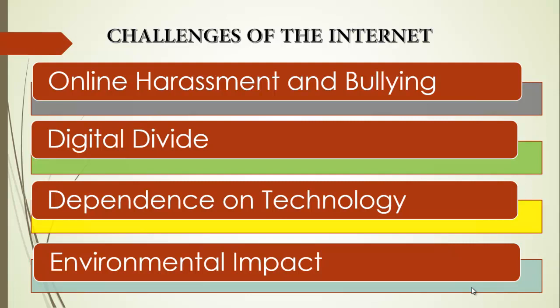Another challenge is online harassment and bullying — the anonymity of the Internet can embolden individuals to engage in online harassment and bullying, which can have serious consequences for victims, as people can abuse each other irrespective of status since they cannot easily be identified. Another challenge is the digital divide — not everyone has access to the Internet, which has created a problem of digital divide leading to social and economic inequality. Another challenge is dependence on technology — as the Internet becomes increasingly integrated into daily life, people have become highly dependent on it, raising concerns about what happens in the event of outages or technical issues.